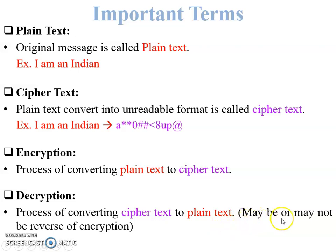Next is decryption. Decryption is the process of converting ciphertext to plain text — it may or may not be the reverse of encryption. Whenever ciphertext is the input to an algorithm, that algorithm is called a decryption algorithm.